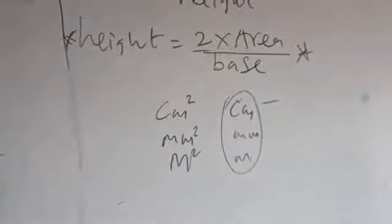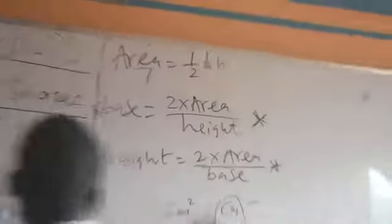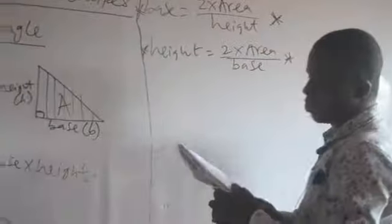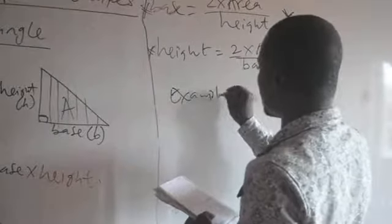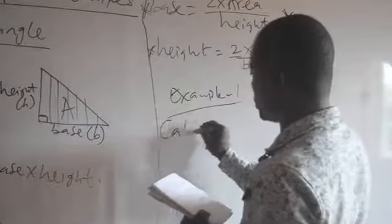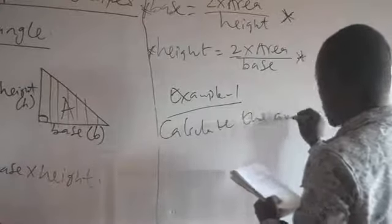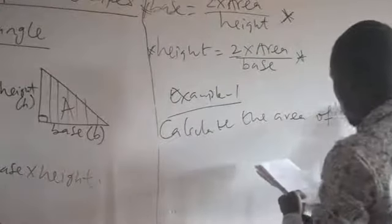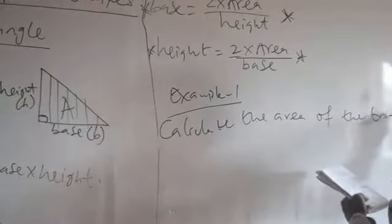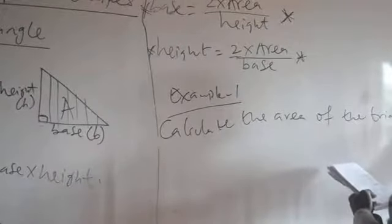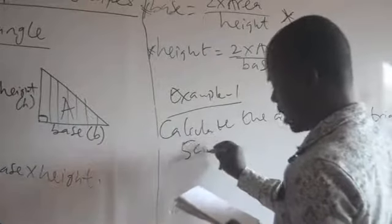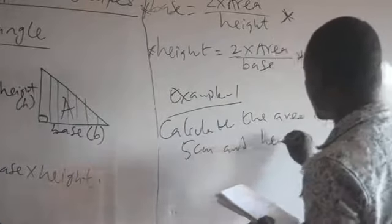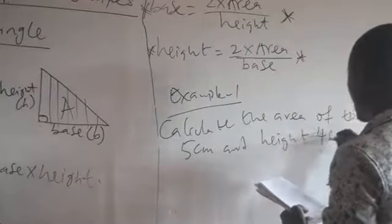Let's take Example 1. So these three formulas you have to practice very well. Example 1: Calculate the area of the triangle with base 5 cm and height 4 cm.